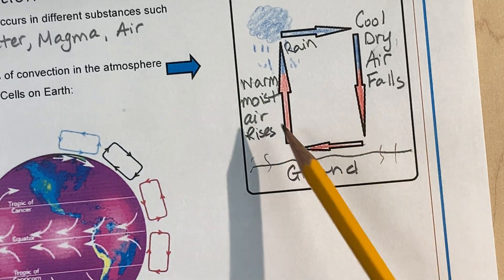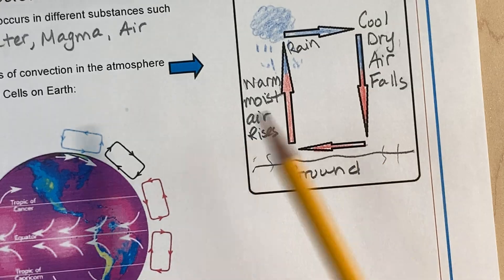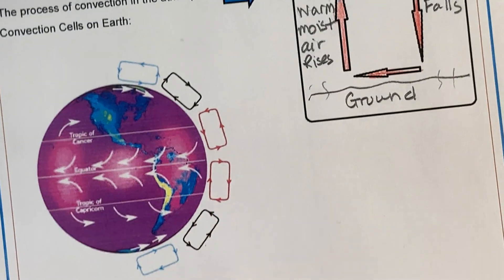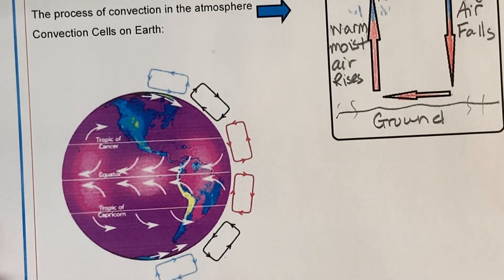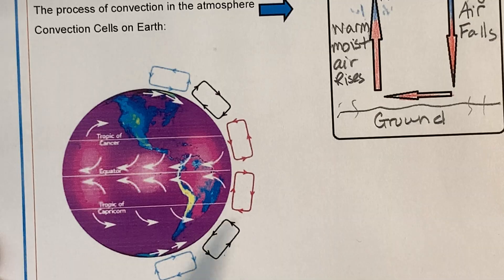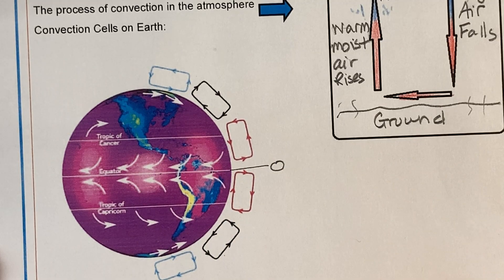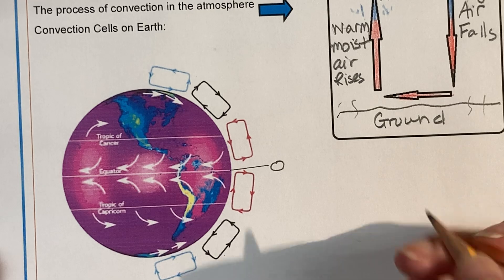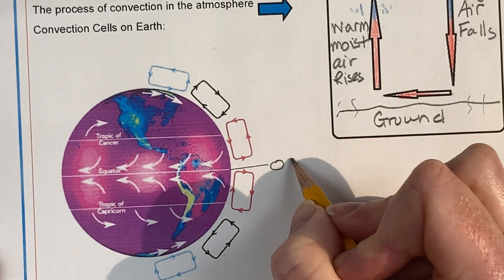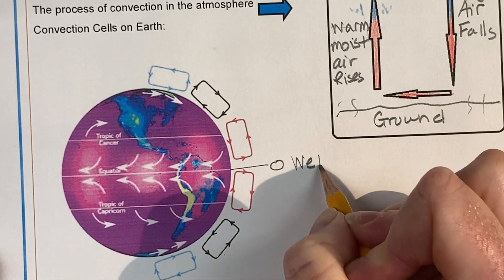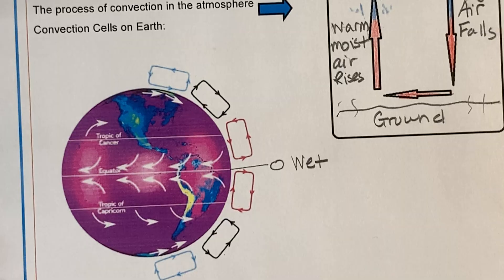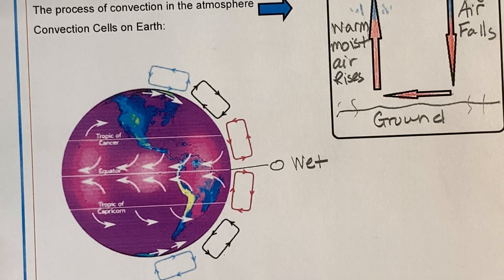Sometimes they're called convection currents. Sometimes they're called convection cells. So over here on this diagram, they're called convection cells. This process happens. Here's our equator. Here's zero degrees. At zero degrees, the equator, you may know, is very wet. It's where your tropical rainforests are.